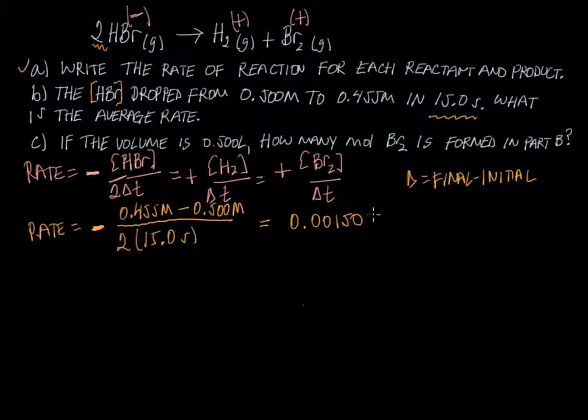Now part C goes a bit further. It says if the volume is 0.500 liters, how many moles of bromine is formed in part B? Okay, so volume—where is that coming from? Well, what you need to remember is that molarity is moles per liter. So to do this, you can just use stoichiometry; that's one way of doing it.